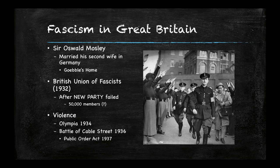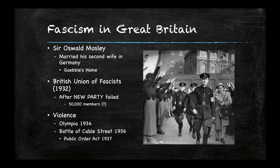We also have to look at the rise of fascism in Great Britain. You're going to read an article about Oswald Mosley, who had very close ties to Germany and was friends with high-ranking officials like Goebbels and the Nazi Party. He started the British Union of Fascists — they had originally called it the New Party, which fell apart, and then they started the BUF. There was a lot of violence associated with them. You'll read about the Battle of Cable Street in 1936 and the Olympia incident. Great Britain passed the Public Order Act in 1937 regarding violence and marches.